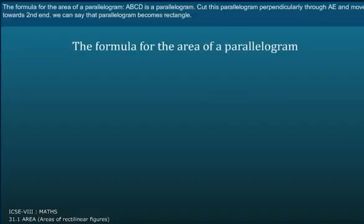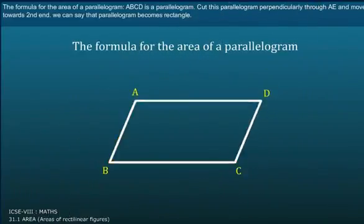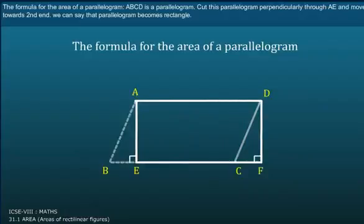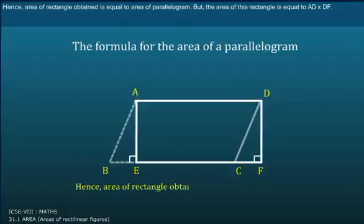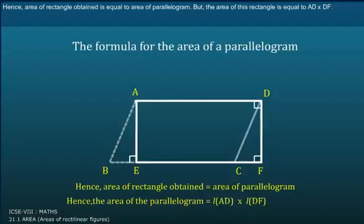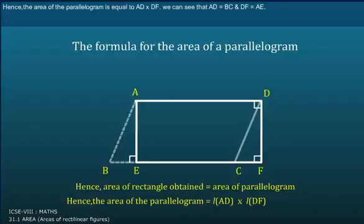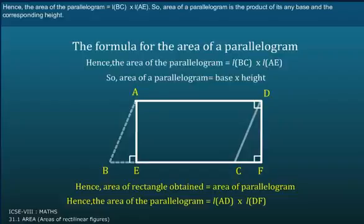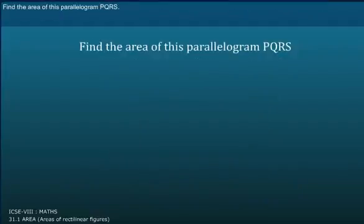The formula for the area of parallelogram: ABCD is a parallelogram. Cut this parallelogram perpendicular through AE and move towards the second end. We can see that the parallelogram becomes a rectangle. Hence, Area of the Rectangle obtained is equal to Area of Parallelogram. The area of this rectangle is equal to AD into DF. Hence, the area of the parallelogram is equal to AD into DF. Since AD equals BC and DF equals AE, the area of the parallelogram is equal to the length of BC into the length of AE.